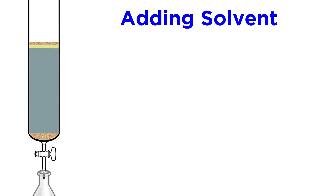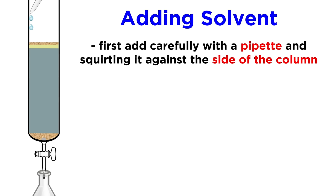Now we add the solvent. At first, we have to carefully pipette the solvent into the column, squirting it onto the sides at the top so that it gently flows down. We do not want to disturb the sand or the gel whatsoever. Do this until the solvent level is several inches above the sand.